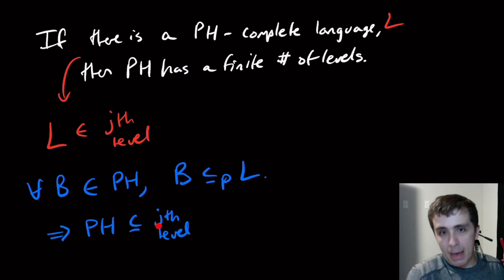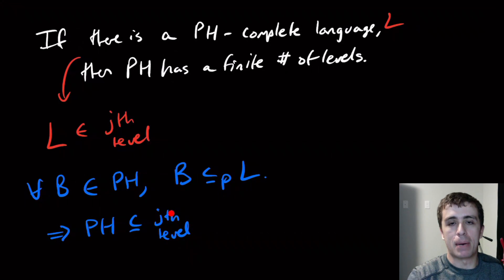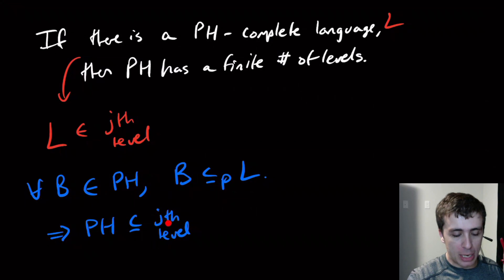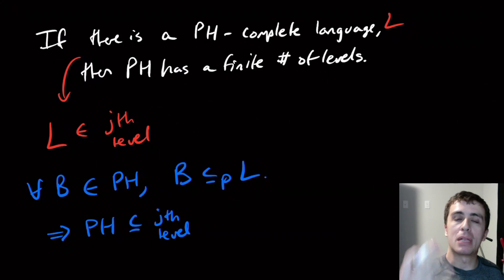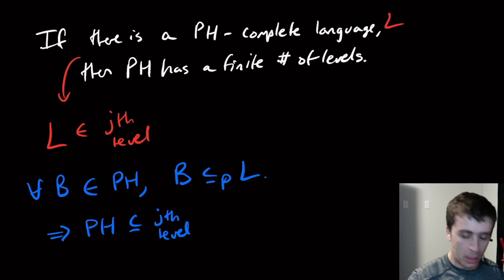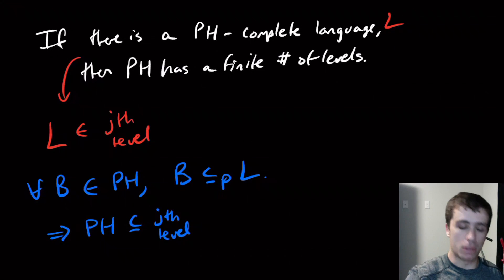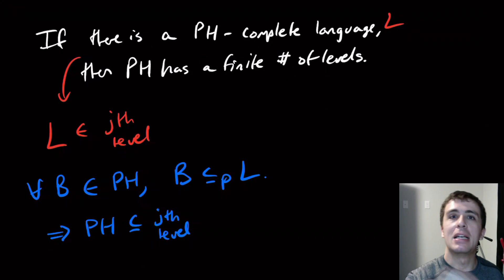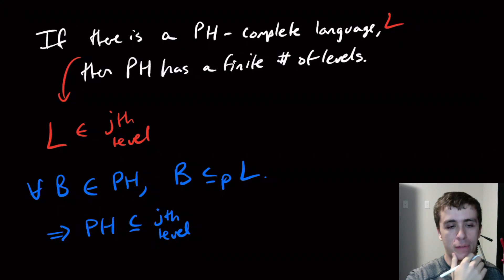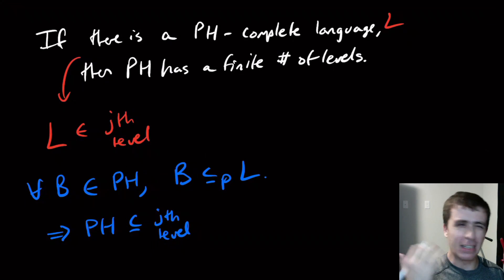It might be that the lower levels under j are different — that's definitely possible. But since the j-th level is by definition a subset of the (j+1)-th level, and we've shown the (j+1)-th is a subset of the j-th, they must be equal. So we only have a finite number of levels — that's the conclusion.